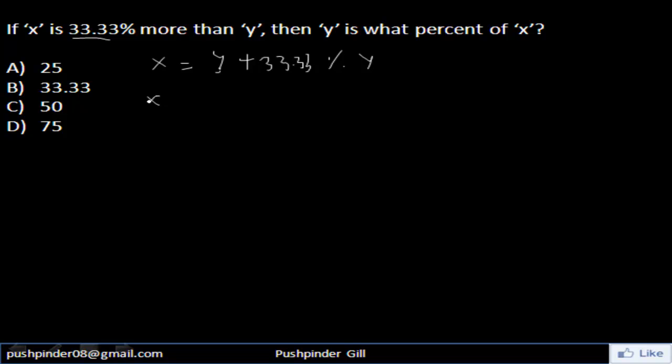So if you take y common out of here, we get it to be 1 plus. Now what is 33.33% as a fraction? That is 1 by 3. So x is equal to 1 plus 1 by 3 of y. So x is equal to 4 by 3 of y.